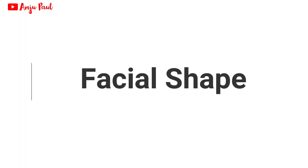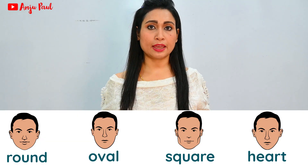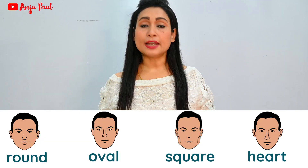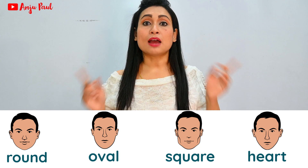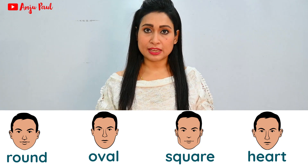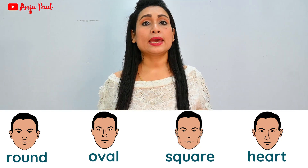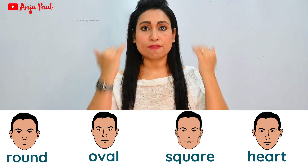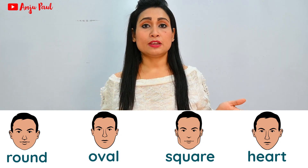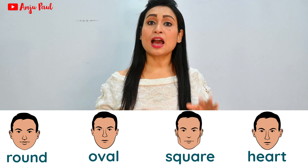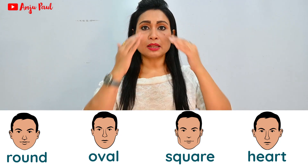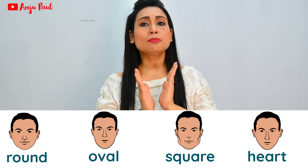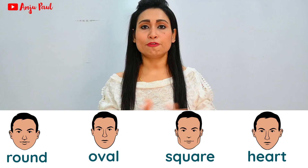If we talk about facial shapes, a face can be oval, round, square, or heart-shaped. A heart-shaped face means the forehead is wider and the chin is pointed. So these are the basic facial shapes you can use to describe a person.